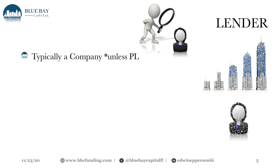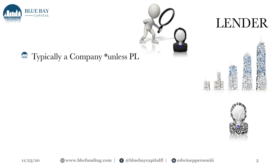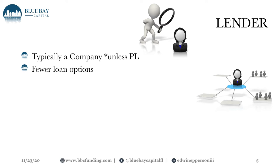Now let's look at the lender. Typically a lender is a company, unless it's a private lender — meaning an individual loaning their own money from a retirement account or their own cash. When working directly with a lender, they have fewer loan options; they only offer what they can fund in-house. For example, if a lender focuses on single-family fix-and-flip and you need a 30-year loan for a multi-family unit, they may not be able to help.